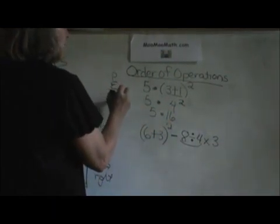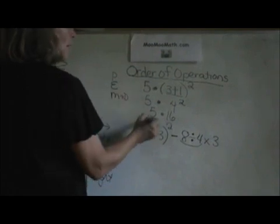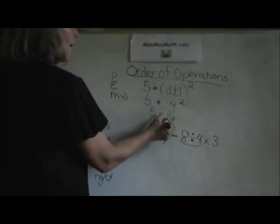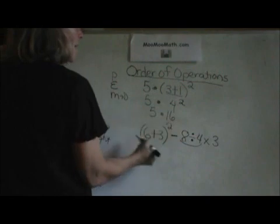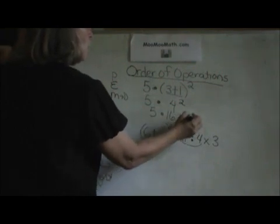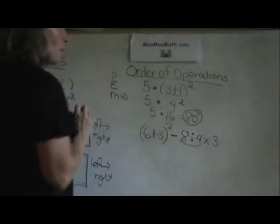Then I am going to multiply and divide from left to right. Well I only have one operation left. So I am just going to multiply 5 times 16 which is 80. So there is my first problem.